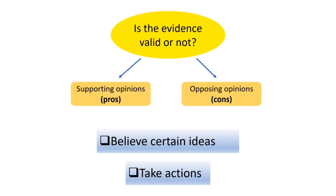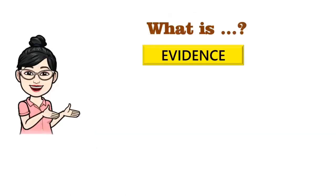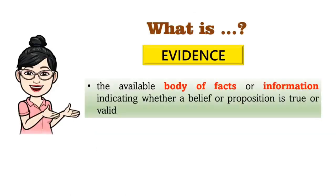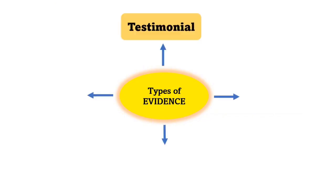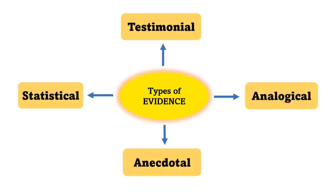Before that, let us first define evidence and its types. What is evidence? Evidence is the available body of facts or information indicating whether a belief or proposition is true or valid. These are the types of evidence: testimonial, statistical, anecdotal, and analogical.